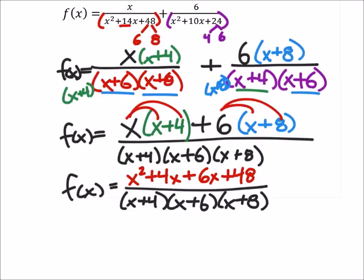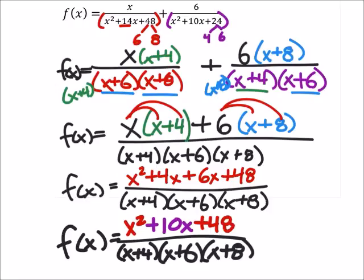So this is what we have now. And from here, just looking at that numerator, we can combine the 4x and the 6x. There's no like terms with x squared or 48. All right, so there we have it.